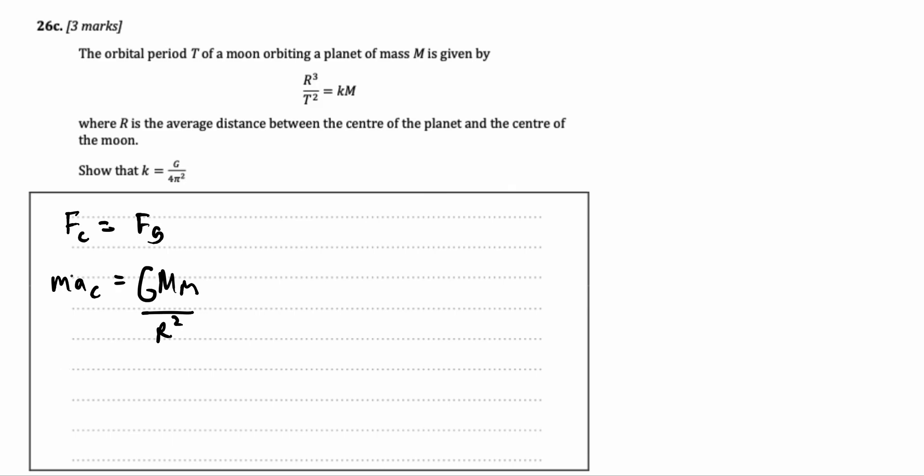The basis of Kepler's third law is the centripetal force is equal to the gravitational force. Centripetal force is mass times the centripetal acceleration. And gravitational force is given in the data booklet as gm m over r square. Now, let's cancel out the m's. Centripetal force also equals 4pi square r over t square and that's equal to gm over r square.